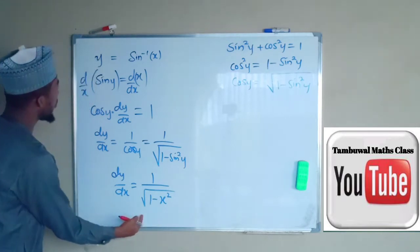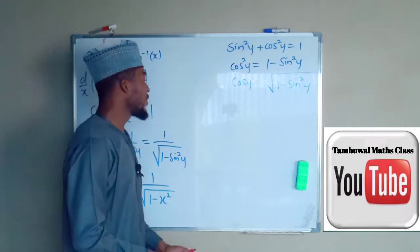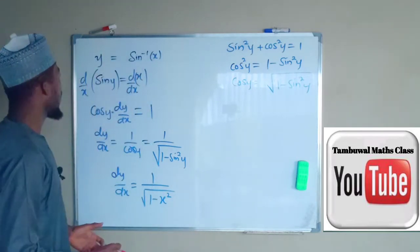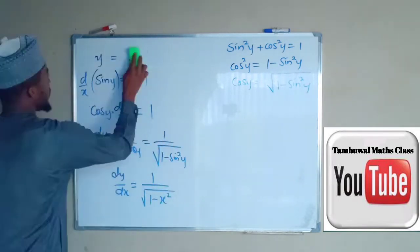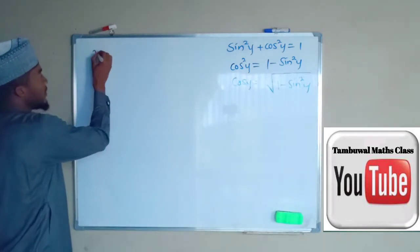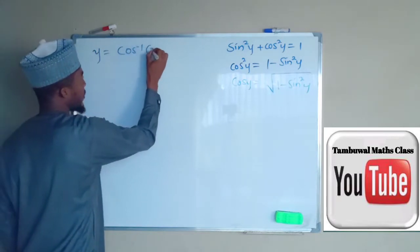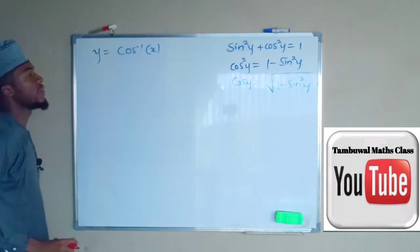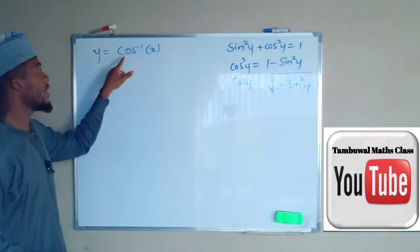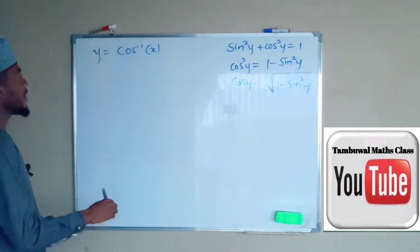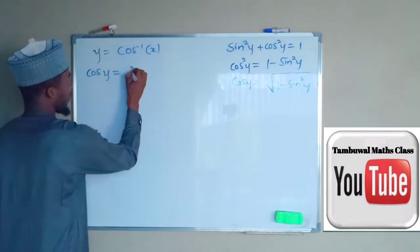So this is the derivative of sine inverse of x. Now let us look at how to find the derivative of cos inverse of x. By multiplying both sides by cos we eliminate the cos inverse, giving us cos y = x on the right hand side.